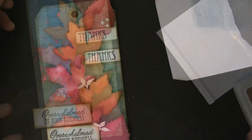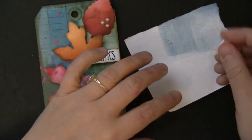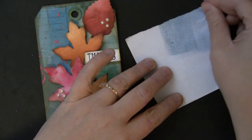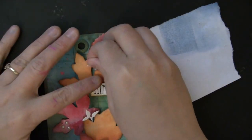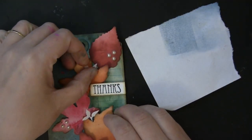And whatever extends beyond the edge of the tag, I will turn over to the back and trim that portion of the sentiment off. Now you can see I've added some pearls, and this is the cutest little die, this is from the die set called Tweet Things,